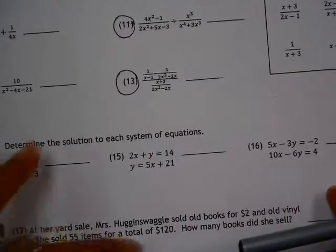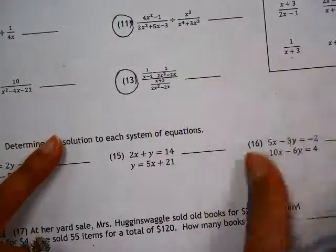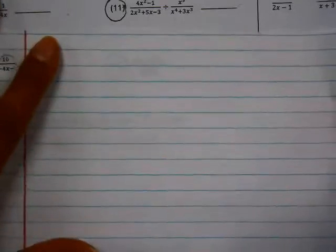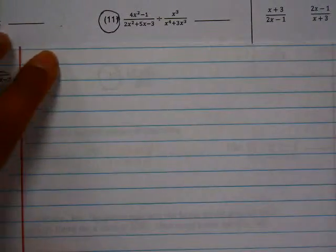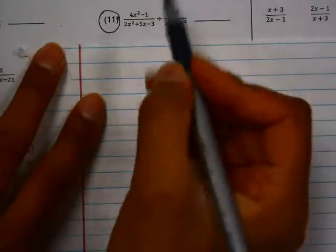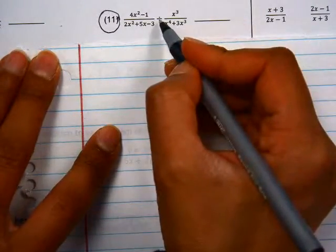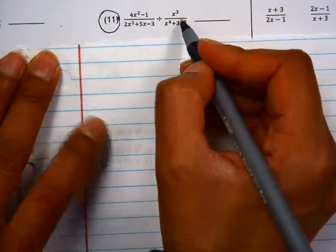In this video, we'll look at 11 through 13, which are rational expressions. 11 is dividing rational expressions. So when we're dividing rational expressions, we want to factor as much as possible and remember to change it to multiplied by the reciprocal.